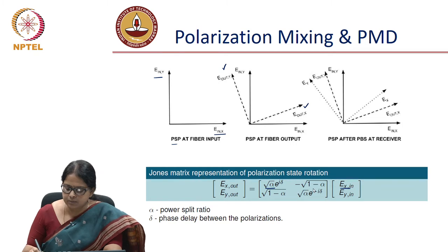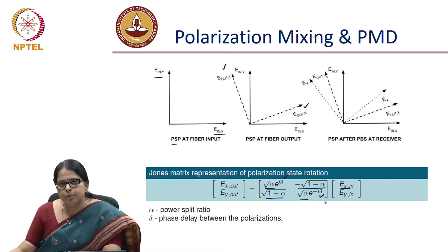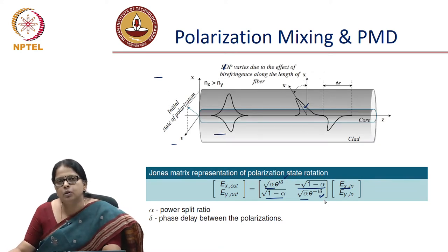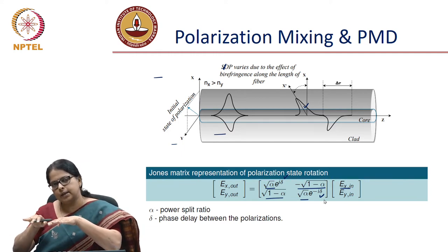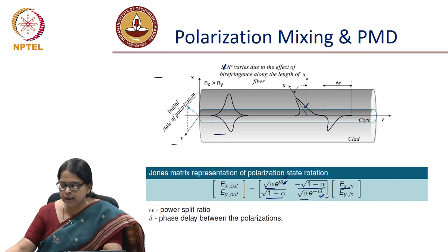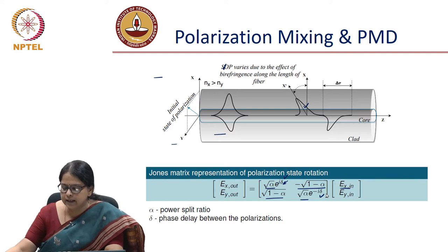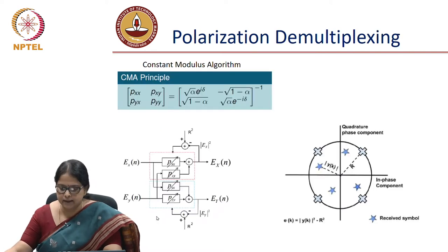The transformation is characterized by the matrix elements: sqrt(alpha), sqrt(1-alpha), -sqrt(1-alpha), and sqrt(alpha). In addition to polarization mixing, there is also polarization mode dispersion, which means that the X-polarization and Y-polarization have a walk-off. They have a phase accumulated between them, represented by e^(j*delta) and e^(-j*delta), where 2*delta is the phase delay between the two polarizations.